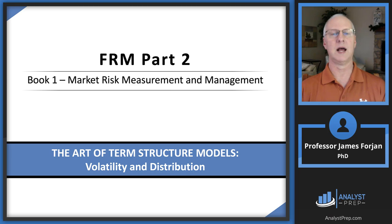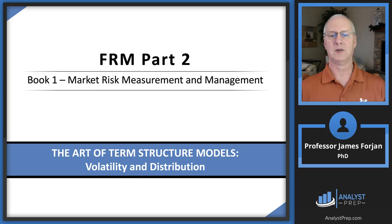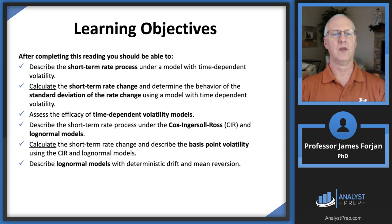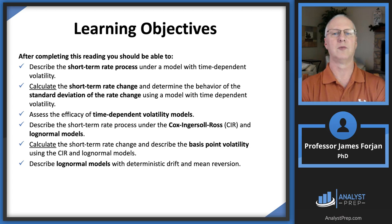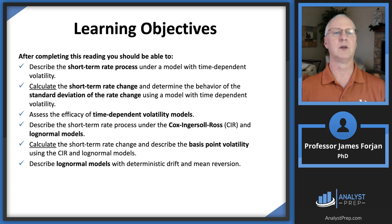What we're going to do in this chapter is examine those models and add a variable or two that considers time-dependent volatility. The learning objectives here look similar to the previous chapter. We'll do a couple of calculations, and I have a really nice summary table for the Cox-Ingersoll-Ross model. The overarching objective is to describe the short-term rate process under a model with time-dependent volatility, followed by some short slides on basis point volatility and log normal models.